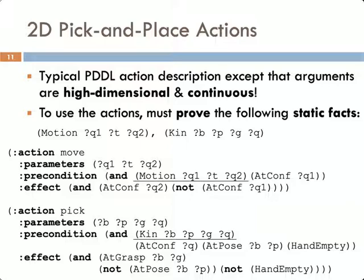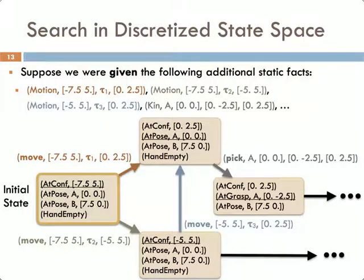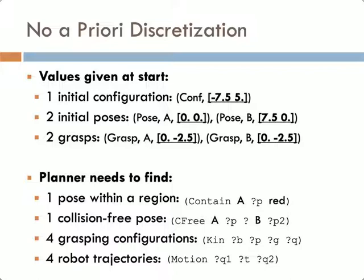Oftentimes these parameters must also satisfy constraints in the form of static preconditions, such as the kinematic constraint kin for the pick action. Supposing an oracle gives us these values and certifies that they satisfy the static constraints, the problem reduces to a finite state space search that can be solved with any off-the-shelf classical planner. However, the challenge in task and motion planning is that no one gives us these values, and even if we had them, we don't know that they satisfy these constraints. All we have is the initial state, which contains the initial configuration of the robot and two initial placements of the objects, and possibly two grasps for the objects. Thus the planner needs to find one placement of object A within the red region, a collision-free placement of B with respect to the chosen placement of A, four configurations for grasping and placing A and B, and four robot trajectories that move between each pick and place.